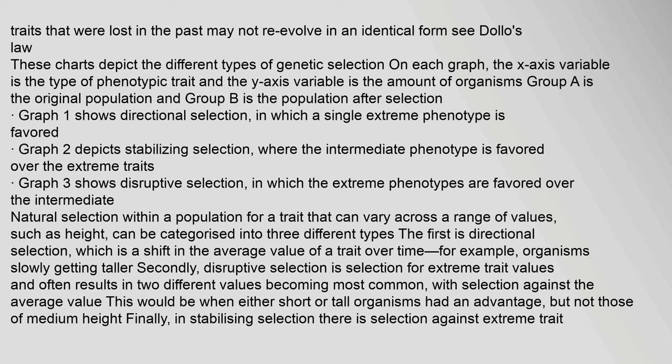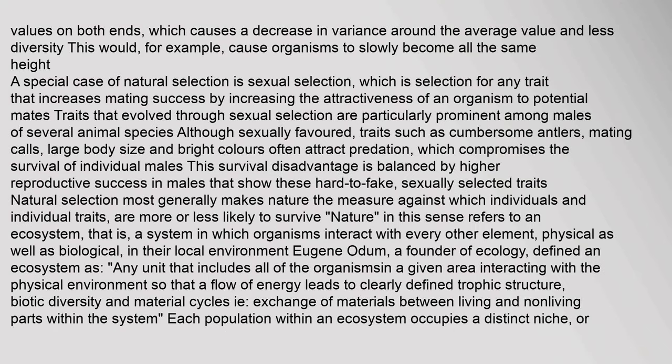Natural selection within a population for a trait that can vary across a range of values, such as height, can be categorized into three types: directional selection is a shift in the average value of a trait over time — for example, organisms slowly getting taller; disruptive selection is selection for extreme trait values and often results in two different values becoming most common with selection against the average value; and in stabilizing selection, there is selection against extreme trait values on both ends, causing a decrease in variance around the average value and less diversity.